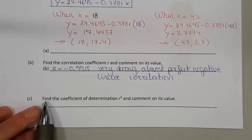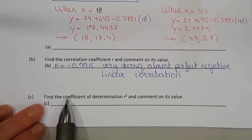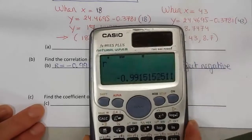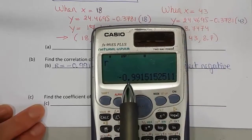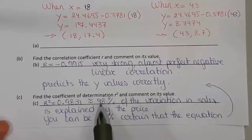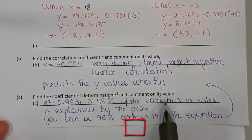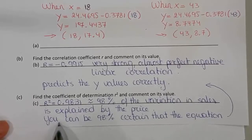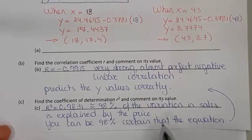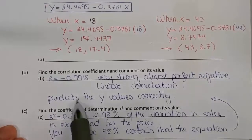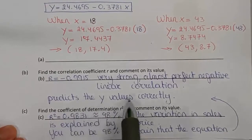Our last question for this problem is asking to find the coefficient of determination, r squared. Remember that we found r in the previous question. Now we just have to square it. 98% of the variation in sales is explained by the price. This means that you can be 98% certain that the regression equation predicts the y values correctly.